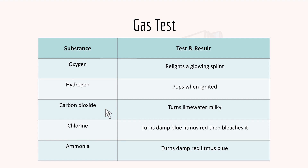For chlorine, it turns damp blue litmus paper red, then bleaches it. And for ammonia, it turns damp red litmus paper blue.